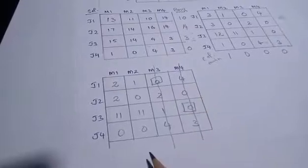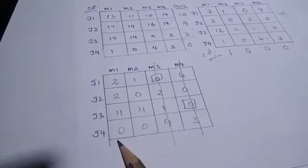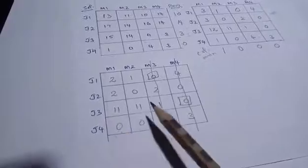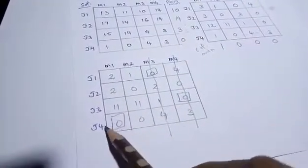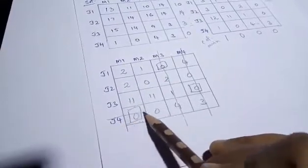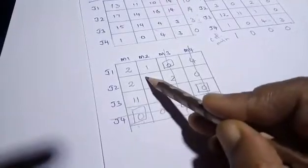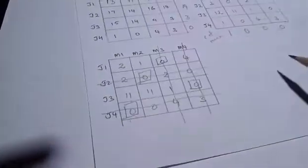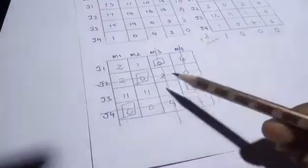Now we have three unmarked zeros remaining. The next procedure is column scanning. We check each column for a single zero, mark it, and cut that particular row. We cut that row. Going through each column, we mark the single zero and cut the corresponding row until all zeros are marked.